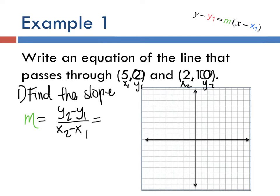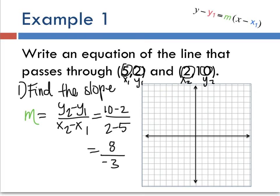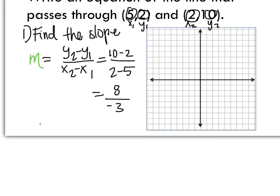What's 10 minus 2? The y's go on top. 2 minus 5. 10 minus 2 is 8. 2 minus 5, this is a tricky one, it's negative 3. So let me just write this all down. Our slope equals negative 8 over 3.